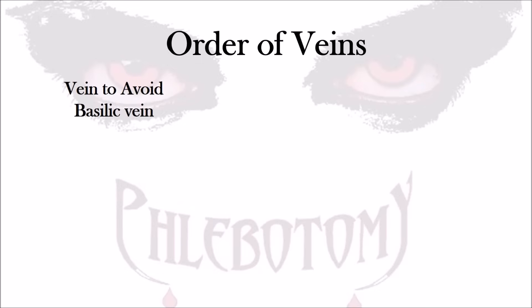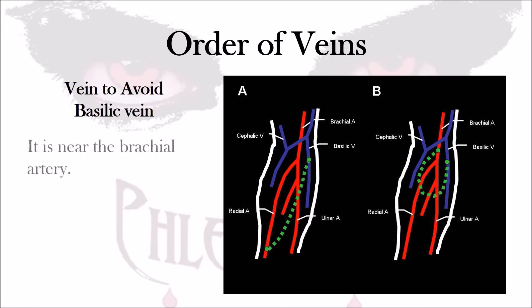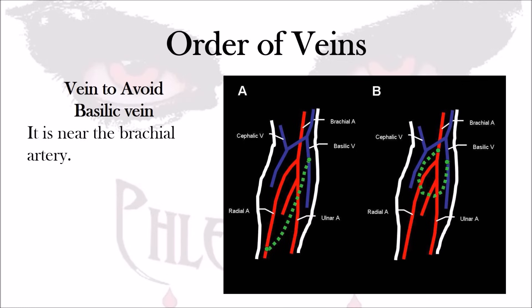As mentioned earlier, the vein we need to avoid or attempt completely last is the basilic vein. The reason for this is because it is near the brachial artery — in fact, the brachial artery runs just underneath the basilic vein. If you put two fingers over the basilic vein area, you should feel a pulse if you push down hard enough. That is the brachial artery. We want to avoid the basilic vein because it carries a higher risk of puncturing the brachial artery, and we want to avoid any internal bleeding that can occur if we do puncture that artery.